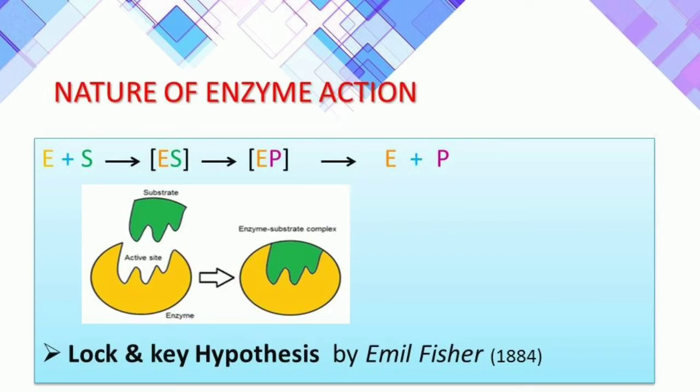Each enzyme (E) has a substrate-binding site, and the highly reactive enzyme-substrate complex is produced: E + S gives rise to the ES complex. This complex is short-lived and forms into new products (P). So: E + S → ES complex → E + products, where the enzyme is unchanged and the enzyme-product complex is finally formed.